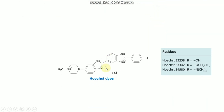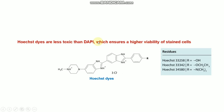As mentioned earlier, the permeability of DAPI into intact or live cells is lower compared to permeabilized cells, and DAPI is also toxic to live cells. This is why people use Hoechst dyes for live cell staining. This is the Hoechst dye structure — it is less toxic than DAPI, which ensures a higher viability of stained cells.